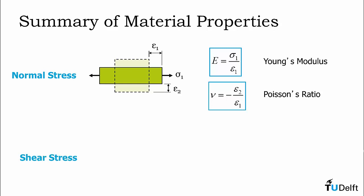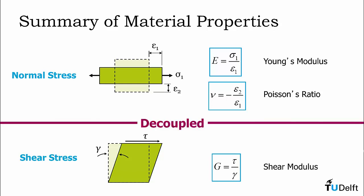And for shear, we see that the shear modulus relates the shear strain to the shear stress. Furthermore, although we did not explicitly say it earlier, these two strains are decoupled, meaning a normal stress does not cause a shear strain and a shear stress does not cause a normal strain. This will be important later when we develop the generalized Hooke's law in the next video lecture.